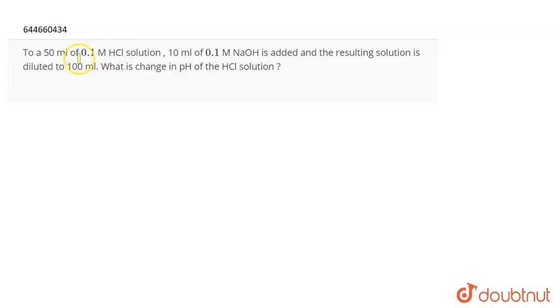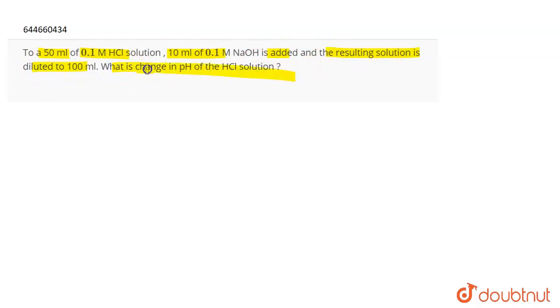The question is: 250 ml of 0.1 M HCl solution — 10 ml of 0.1 M NaOH is added and the resulting solution is diluted to 100 ml. What is the change in the pH of the HCl solution?